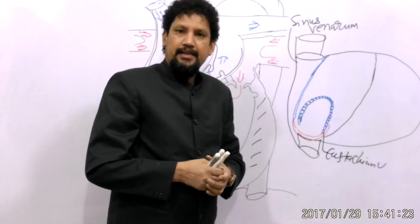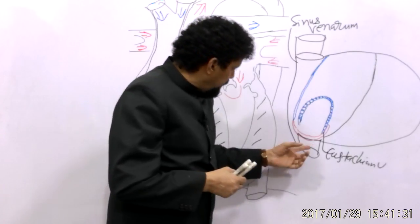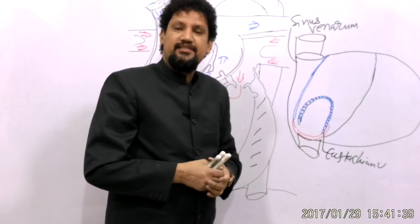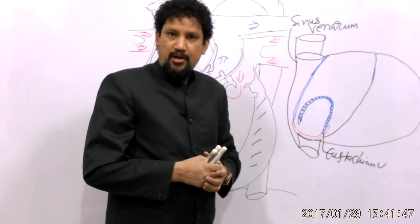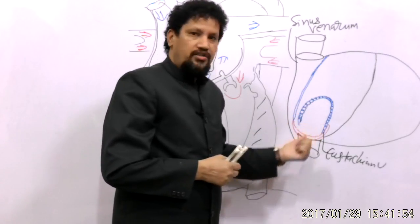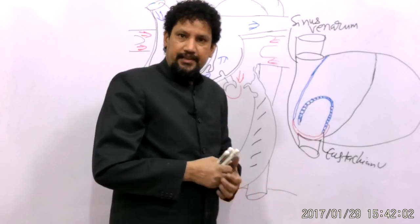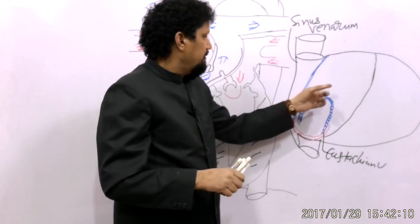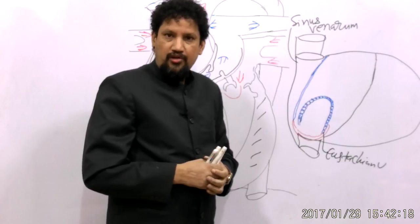The Eustachian wall maintains the flow of blood during fetal life, shunting blood from the inferior vena cava directly to the left atrium. During fetal life, the lungs are not functioning, so the well-oxygenated blood coming from the placenta through the umbilical vein enters the inferior vena cava through the ductus venosus and is directly shunted to the left ventricle by the direction of this Eustachian wall. After birth, this wall becomes rudimentary.